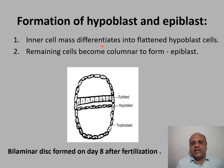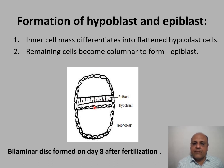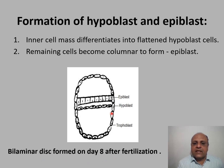After that, the bilaminar disc is formed from the inner cell mass. The cells differentiate into a flattened hypoblast cell layer, while the remaining cells become columnar and form the epiblast layer. So the epiblast and hypoblast layers are both derived from the inner cell mass, forming the bilaminar disc by day eight after fertilization. Epiblast cells are columnar and hypoblast cells are flattened.